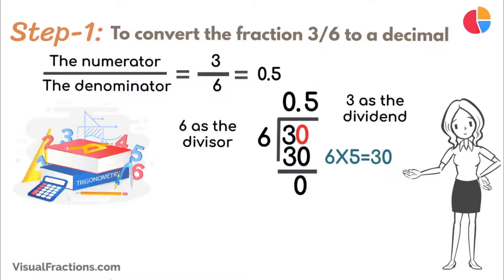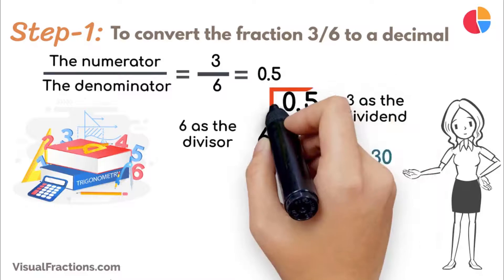With the remainder now 0, we have found our exact decimal representation, which is 0.5.